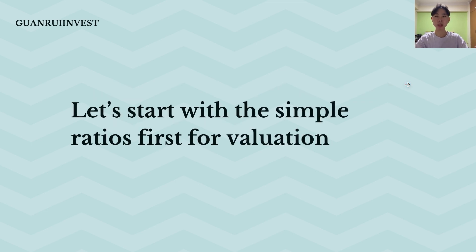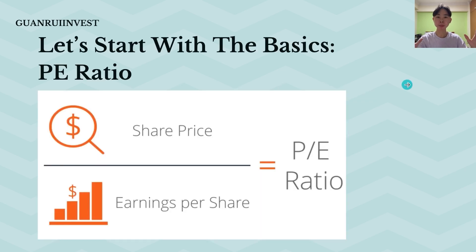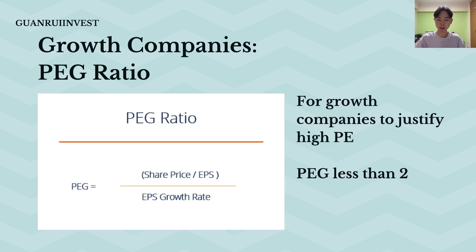Let's talk about the simple ratios that you can use for valuation. The first one is the simple P/E ratio. Your P/E ratio is simply the price of the stock divided by the earnings of the company. The higher the P/E ratio, the more expensive the company is; the lower the P/E ratio, the cheaper the company is.